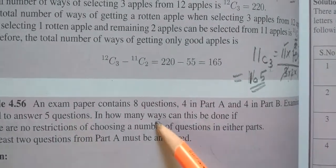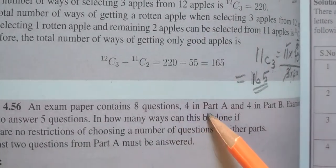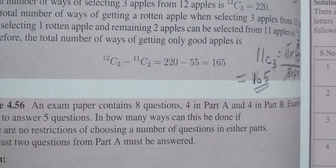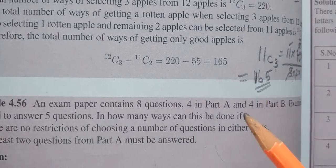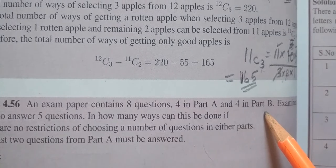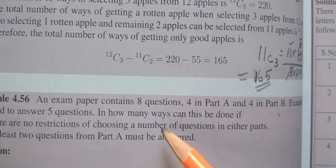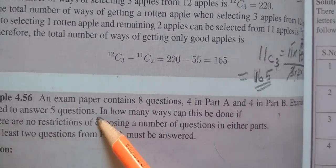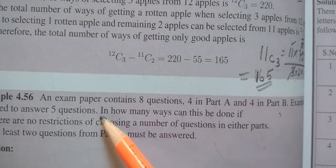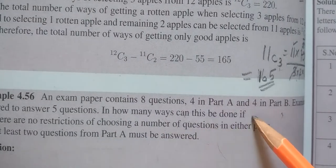An exam paper contains 8 questions, 4 in Part A and 4 in Part B. In the exam, you have to answer 5 questions. In how many ways can this be done?